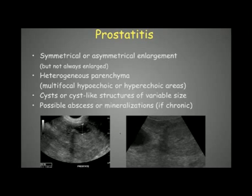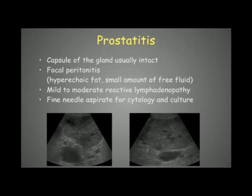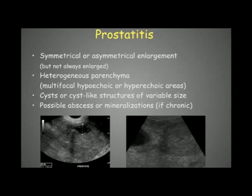These signs help us determine it is prostatitis and not just benign hyperplasia. When prostatitis begins and cysts are still small, it can still look like benign hyperplasia, so we look for other signs such as focal peritonitis — hyperechoic fat or free fluid around the prostate. Here we have free fluid encapsulated in the region of the prostate, indicating focal inflammation. The capsule is usually intact but can be interrupted, as seen here where the prostatic borders are no longer clear.